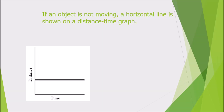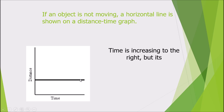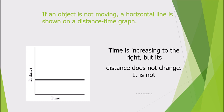If an object is not moving, a horizontal line is shown on a distance-time graph. Time is increasing to the right, but the distance remains the same — it does not change. So we say that the object is at rest.